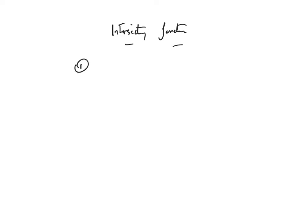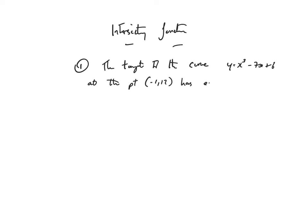Let's start with Example 1. We've got the tangent to the curve y equals x cubed minus 7x plus 6 at the point (-1, 12), which has equation y plus 4x equals 8. The question is: find the coordinates of the other point of intersection.